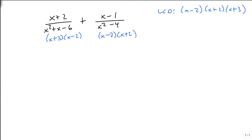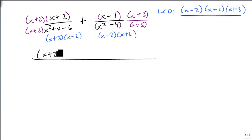So then we just need to multiply by what we're missing. This has the x plus 3 and the x minus 2, so it's missing the x plus 2. And this is missing the x plus 3. And I already know that my LCD is going to be this, so I'm going to ignore it for a moment and just write this as x plus 2 times x plus 2 plus x minus 1 times x plus 3 all over the LCD.